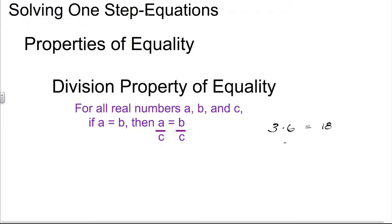When solving one-step equations, you always want to keep in mind the properties of equality. This is how we accurately show our work and prove our answers correct. The property we're going to be working with in today's video segment is the division property of equality. It reads: for all real numbers a, b, and c, if a is equal to b, then a divided by c is equal to b divided by c.